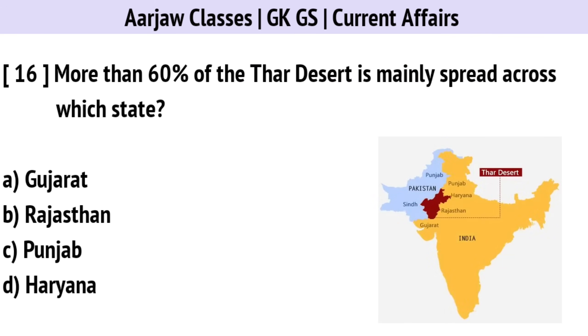More than 60% of the Thar Desert is mainly spread across which state? Correct option is B — Rajasthan.